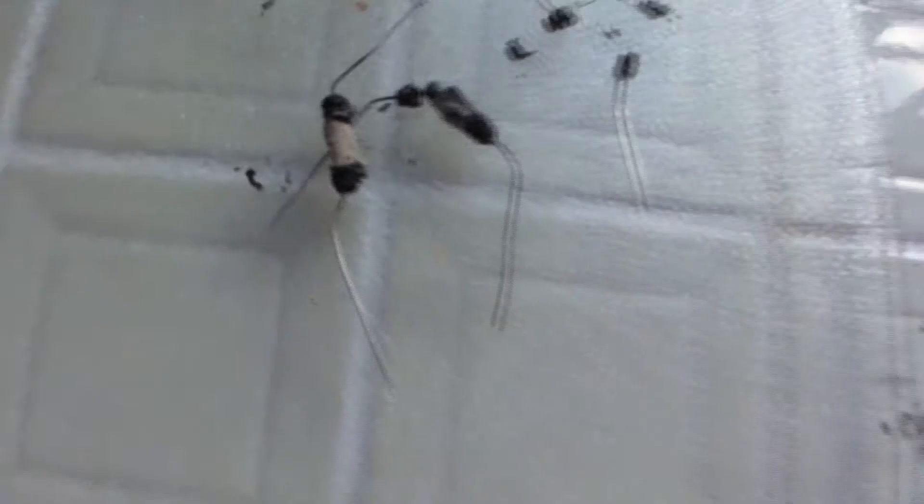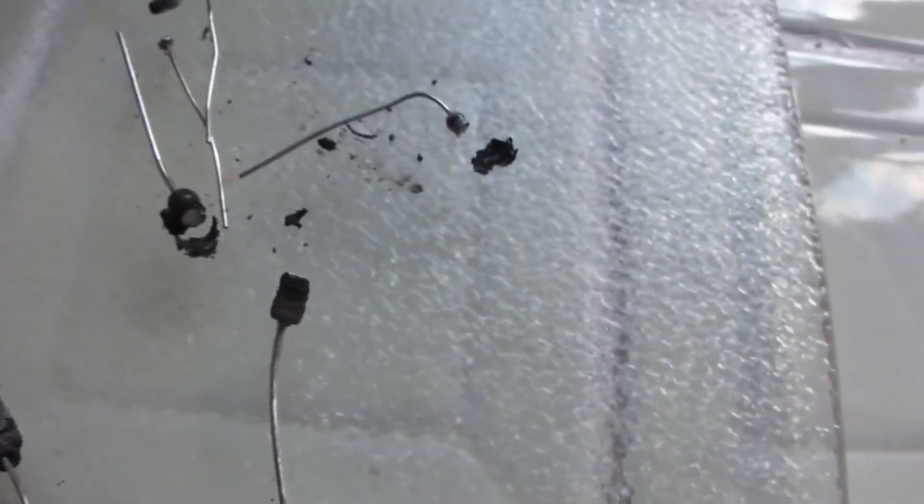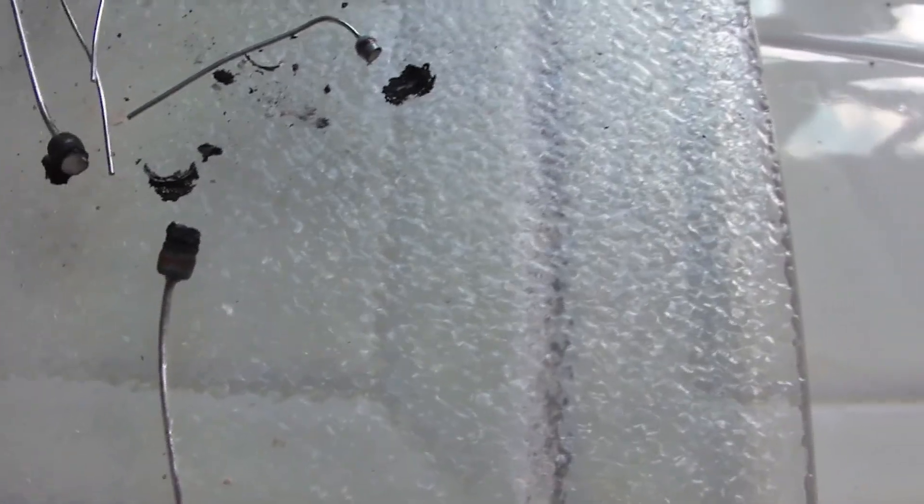And we're done. All right, so these were two 680 ohm flame-proof resistors. Well, they weren't flame-proof, but they're metal film kind.